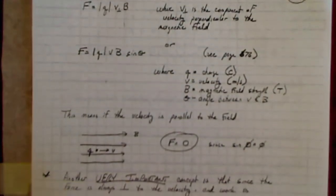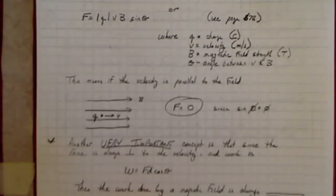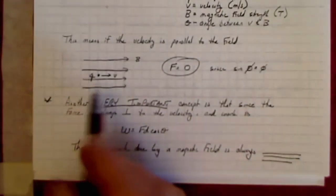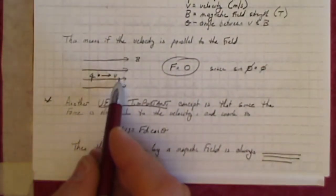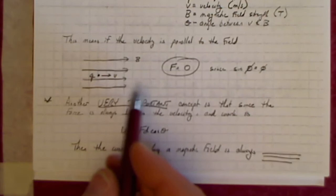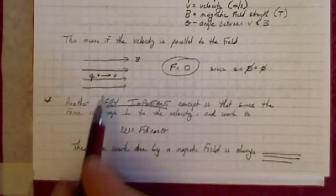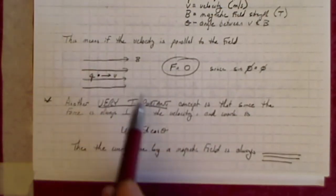Now, once again, if the charge is moving parallel to the magnetic field, sine of zero is zero, there will be no force acting on that charge.